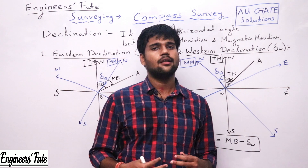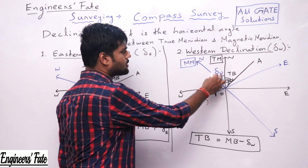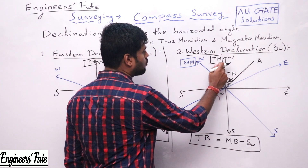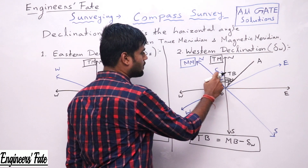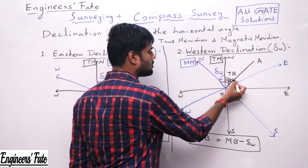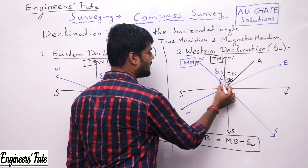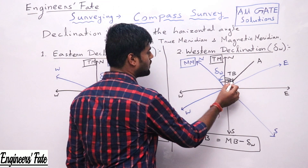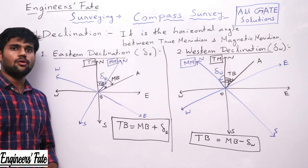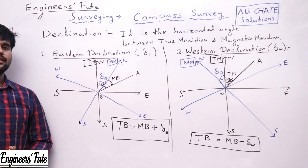The second type is western declination — the declination is towards west. You can see the angle between true meridian and magnetic meridian is the declination. The true bearing is the angle between true north and the line. The magnetic bearing is the angle from magnetic north to the line. For western declination, true bearing = magnetic bearing − declination. While solving questions I will tell you the trick so you don't need to memorize.